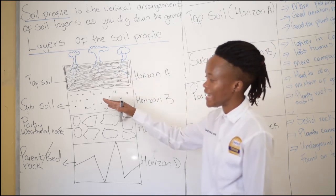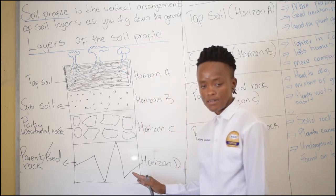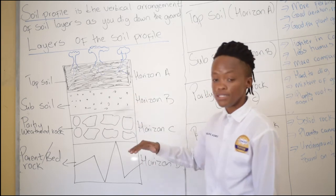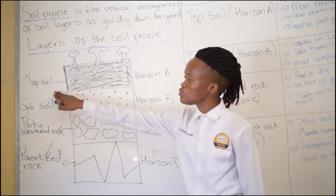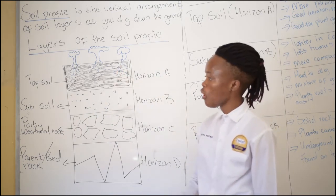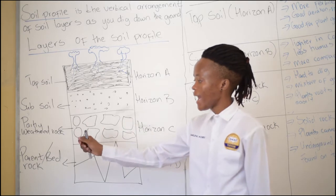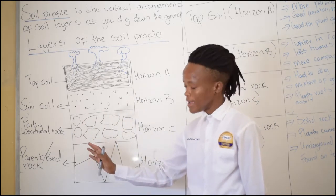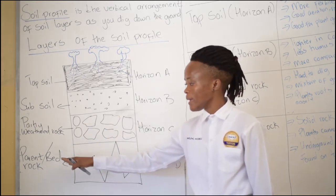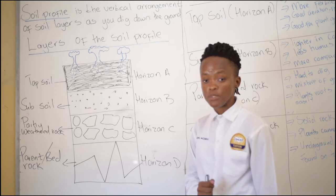We have four layers of the soil profile, and they have another name — we can also call them horizons. When you dig down the ground, you will see different layers with different colors. The first layer is called the topsoil. The second layer is called the subsoil. The next layer is called the partly weathered rock. And the last layer, the fourth layer, is called the parent rock or the bedrock — it's the foundation.